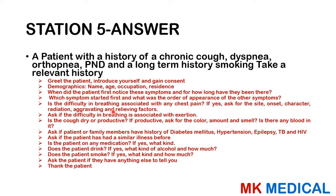Take a focused history — you don't have much time. Ask about personal or family history of diabetes, hypertension, heart failure, epilepsy, TB, and HIV. Ask if they've had a similar illness before, and if they're on any medication including chemotherapy, which can cause dilated cardiomyopathy. Ask about alcohol intake — how much and what kind — and smoking: how long, what kind. Ask the patient if they have anything else to add.